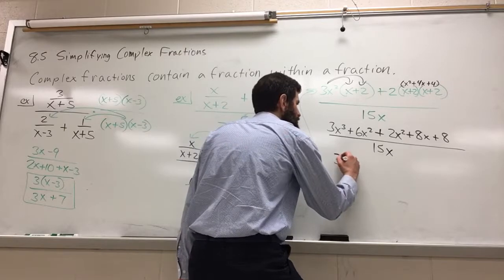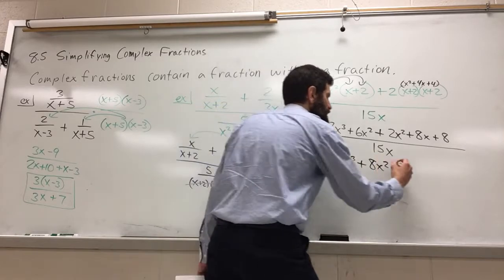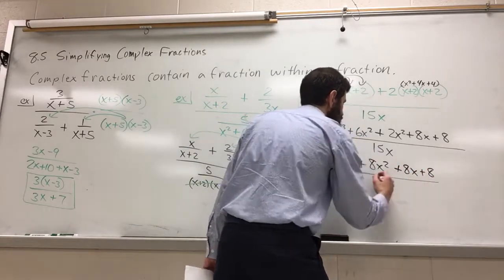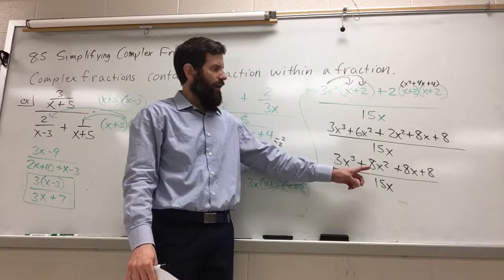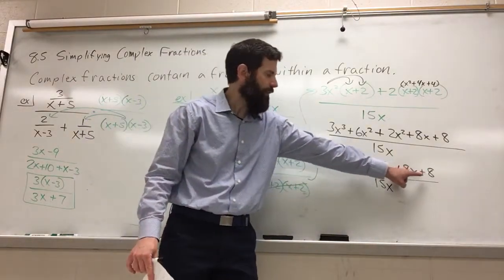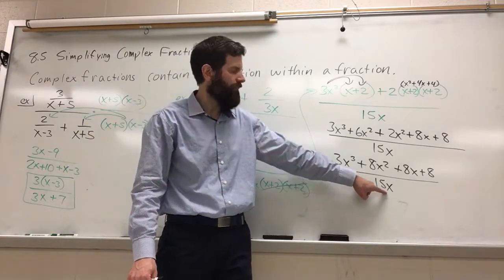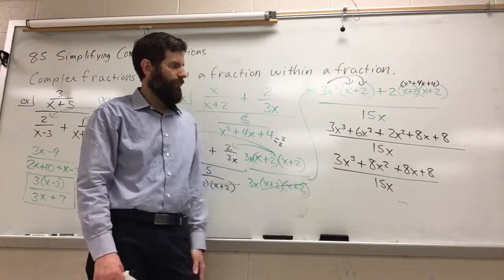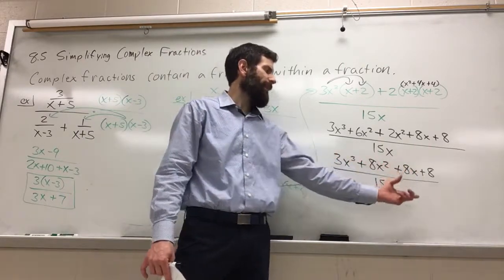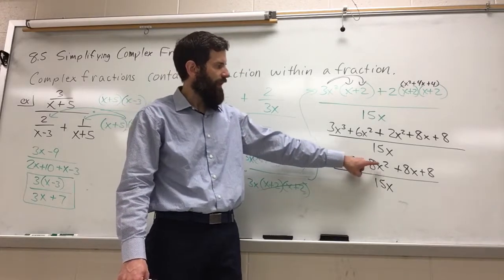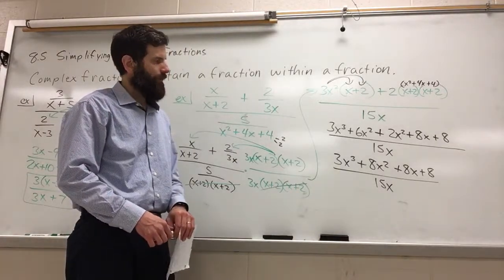Combined like terms, we get 3x to the third plus 8x squared plus 8x plus 8 over 15x. Now you might be concerned that this could factor. Notice we cannot factor out a monomial, that 3 kind of wrecks that. So we're not going to be able to divide anything with a monomial in our denominator. You might think about factoring by grouping and that's a good idea, but as you can see, the 3 and the 8, the 8's there. Factoring by grouping is actually not going to work either. So we're in good shape here.